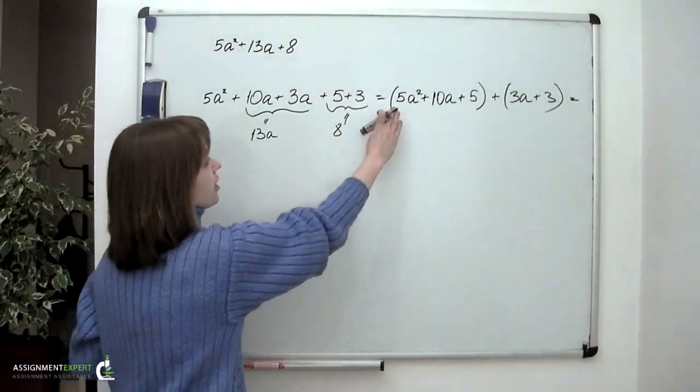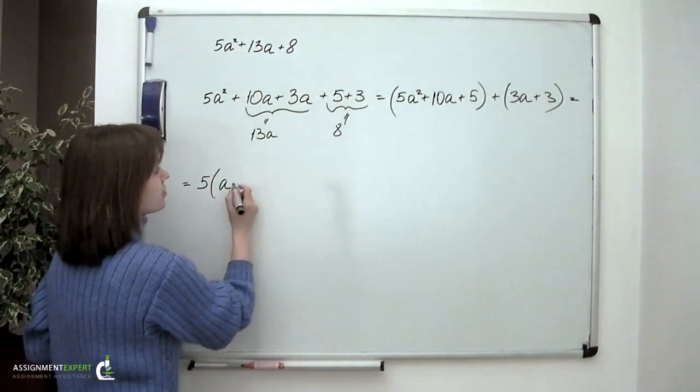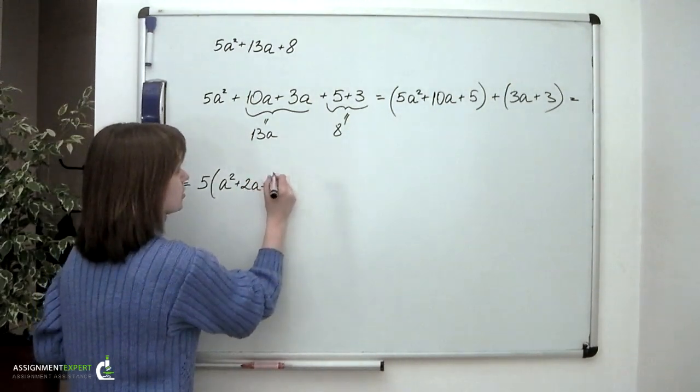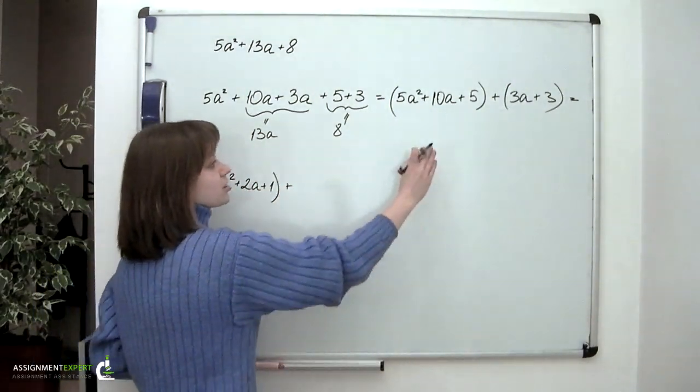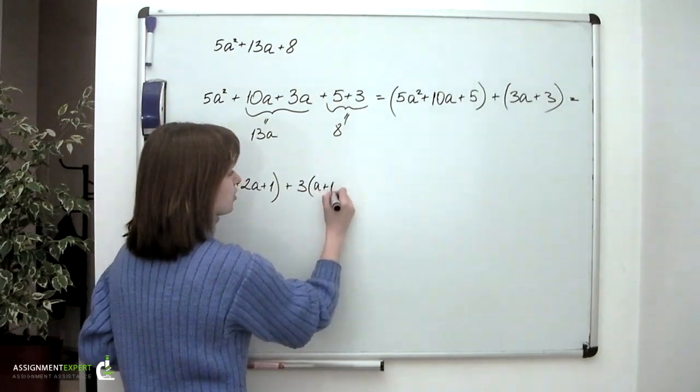Let's factor 5 out of the first summand. So we have 5 times squared a plus 2a plus 1. And factor out 3. 3 times a plus 1.